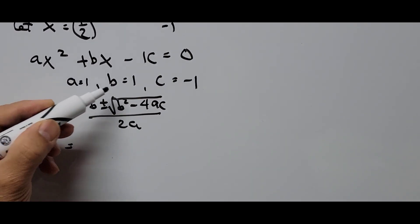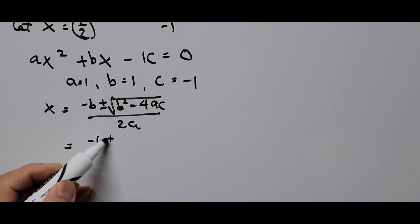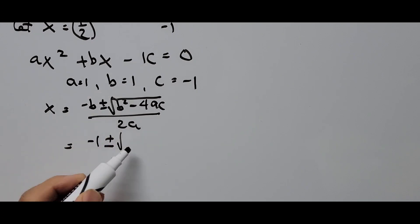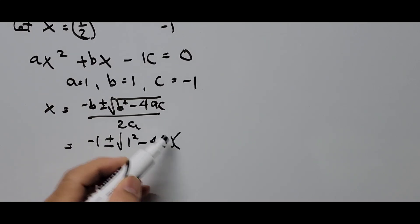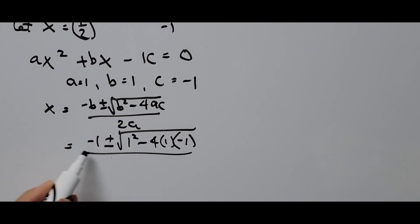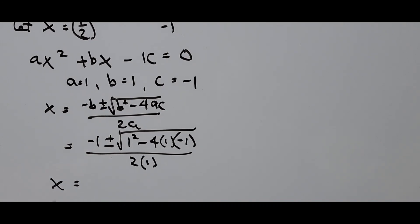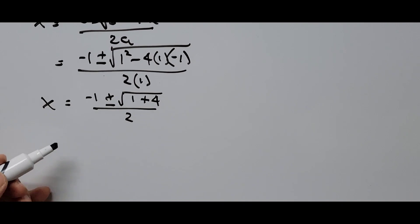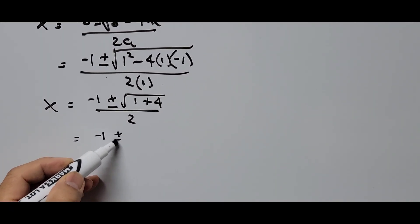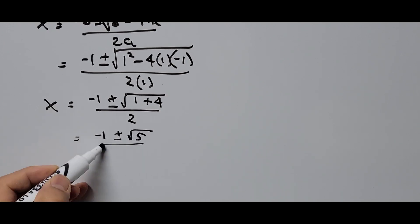Substituting a = 1, b = 1, c = −1: x = (−1 ± √(1² − 4·1·(−1))) / (2·1) = (−1 ± √(1 + 4)) / 2 = (−1 ± √5) / 2.